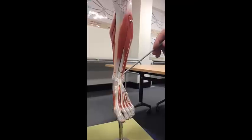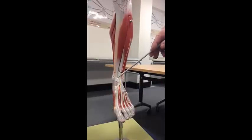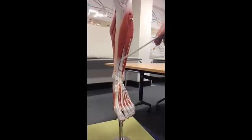So the muscles of the leg are divided into three compartments. Here we have the anterior compartment.